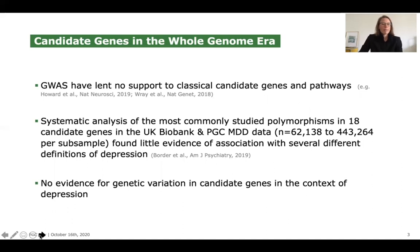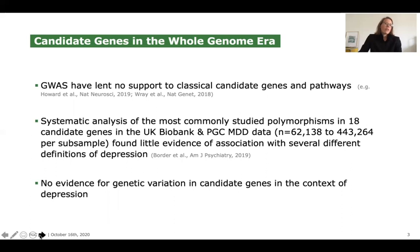Systematic analyses of the most commonly studied polymorphisms in 18 candidate genes in both the UK Biobank data and the PGC MDD data found little evidence of association with several different definitions of depression. Overall, there is no sound evidence for genetic variation in candidate genes in the context of depression, and many funding bodies and researchers have suggested that we stop looking for it.